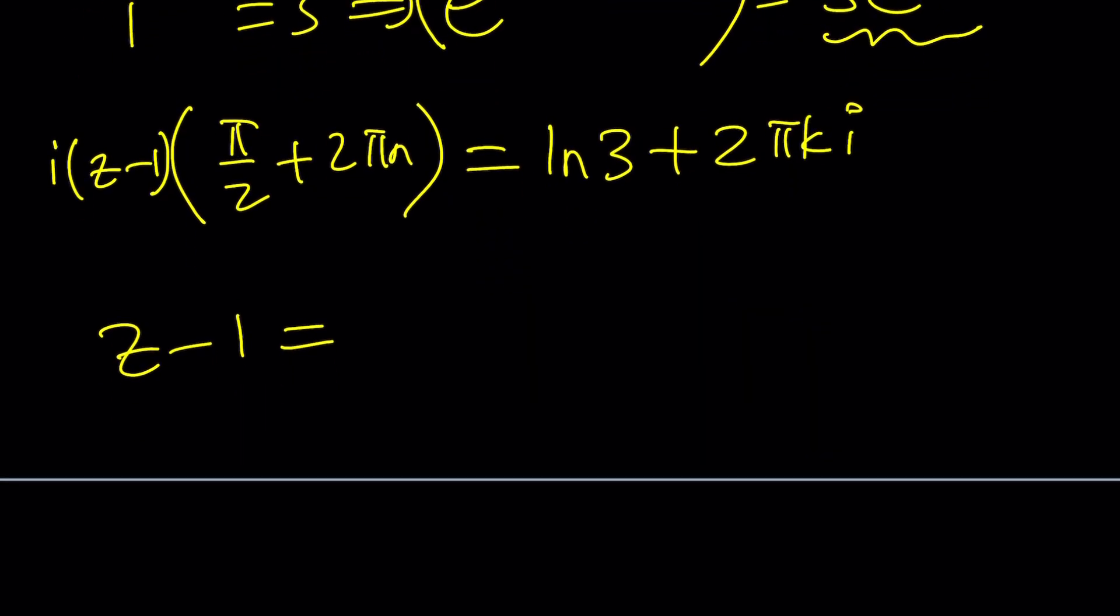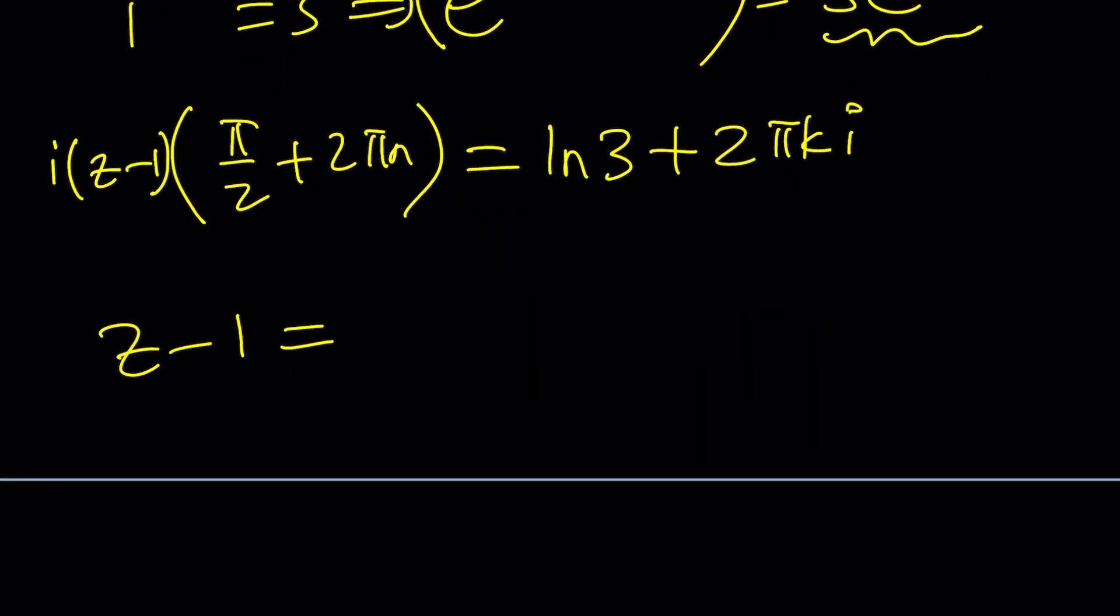Now, if you divide both sides by i times this, of course, dividing by i is equivalent to multiplying by negative i. So our expression is going to look like this. Can I? Let me write it this way. I was trying to keep it short, but I don't want to skip steps here. So maybe ln 3 plus 2 pi k i, and then I'm going to multiply that by i times this.